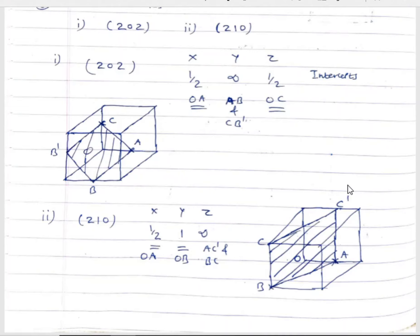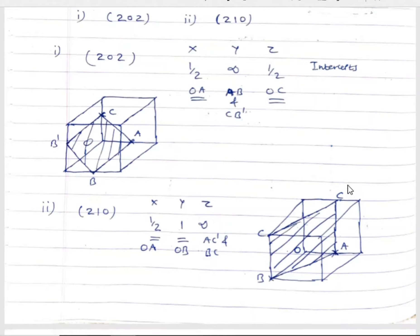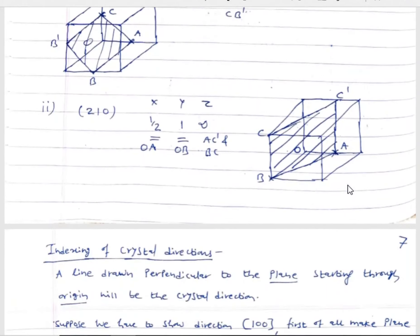This was about the indexing of crystalline planes. Now we will see about the indexing of crystal directions. A line drawn perpendicular to a plane and starting through the origin is called a crystal direction. There are different types: direction along an edge, direction along a face diagonal, and direction along the body diagonal of the cube.